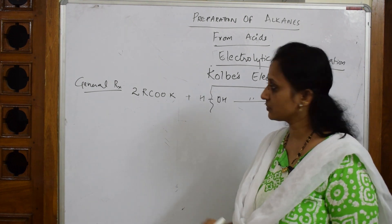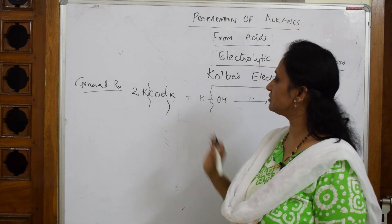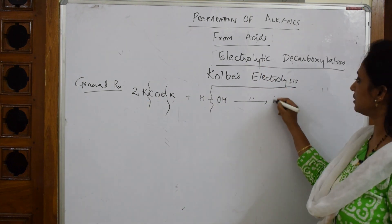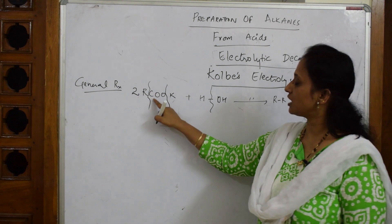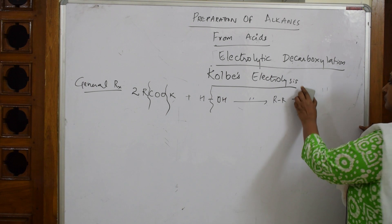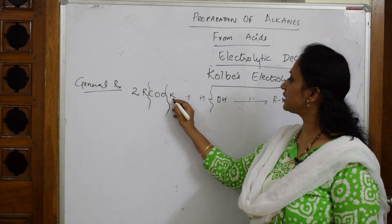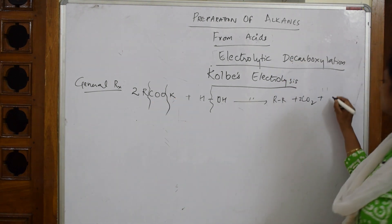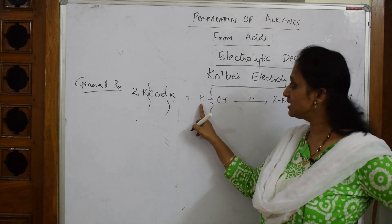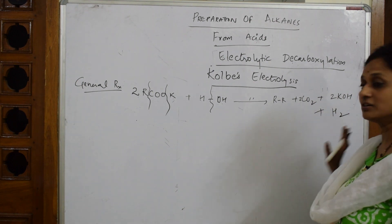There is a cleavage here and a cleavage here. Let us write the products: R–R (the alkane), then two CO₂, then two KOH (potassium combines with OH), and finally hydrogen gas H₂ is also released. This is the overall reaction.